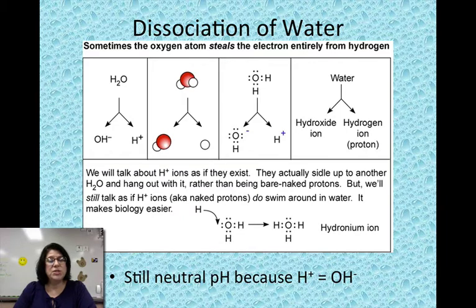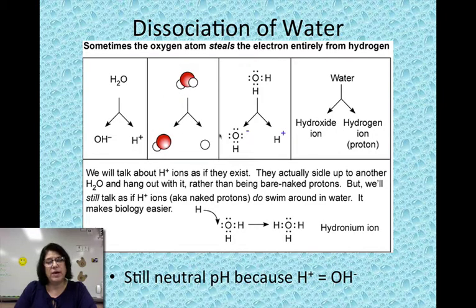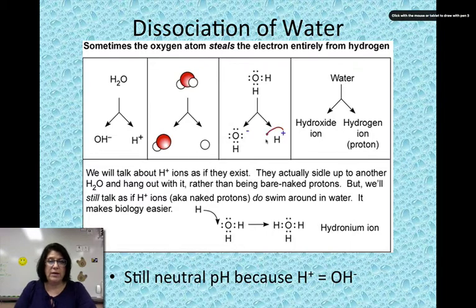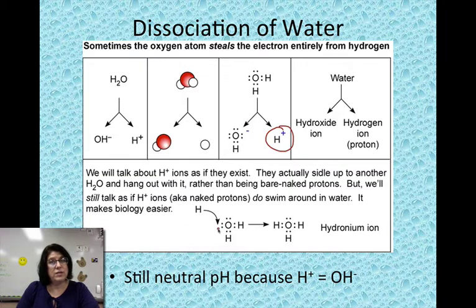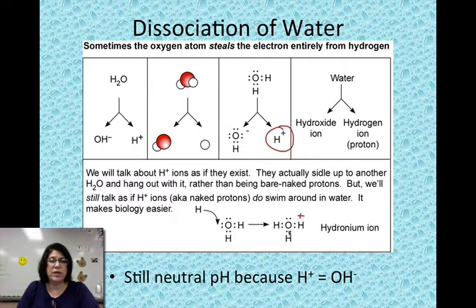Here are a couple more representations of the dissociation of water — the words, the formulas, the space-filling model, and the Lewis dot structure. Each time, the same thing is basically happening: the hydrogen ion or proton is leaving, and what's left behind is the hydroxide ion that now has a negative charge. The electron that used to belong to hydrogen is now in the hydroxide. The bottom part is a reminder that typically that hydrogen attaches onto another water to make the hydronium ion, which has a positive charge because of its extra proton.